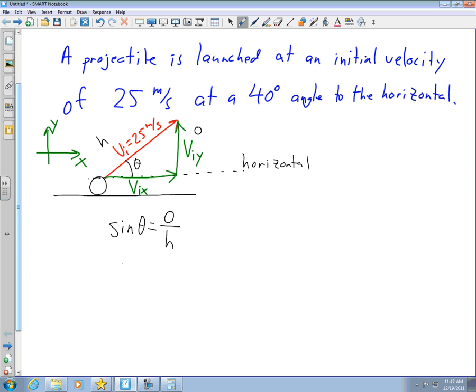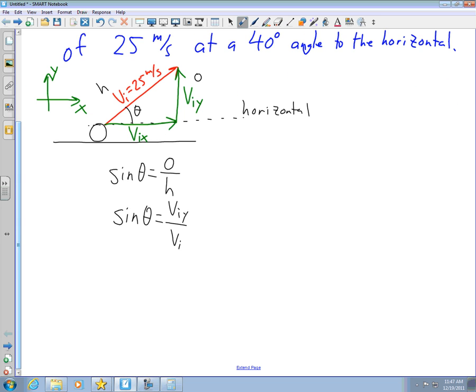So I can write this as sine theta is equal to opposite VIY over hypotenuse VI. I'm looking for VIY, and so I'm going to solve for VIY is equal to VI times sine of theta.